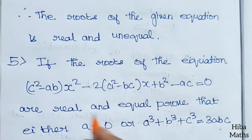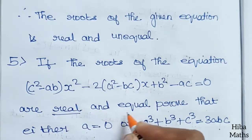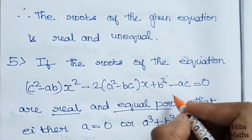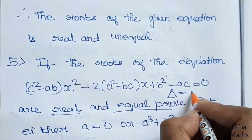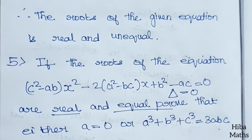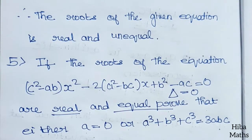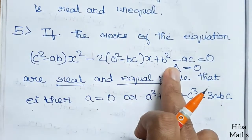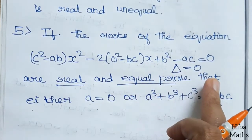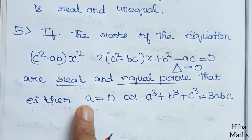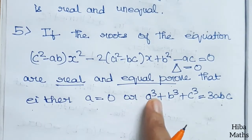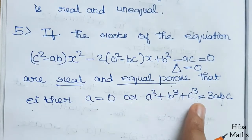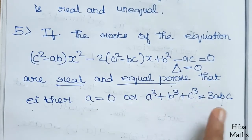We have this equation. How do the roots become real and equal? Real and equal means the discriminant value is 0. So the discriminant value is 0, and we need to prove either a = 0 or a³ + b³ + c³ = 3abc.